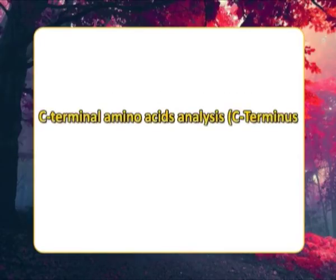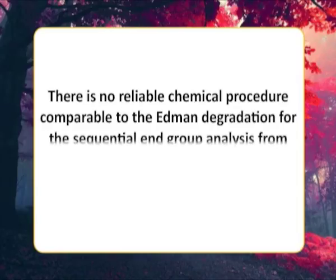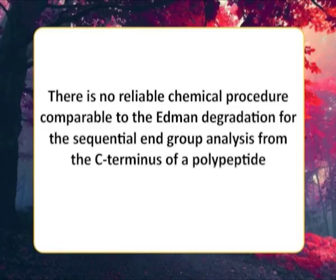Now coming to C-terminal amino acid analysis, that is C-terminus identification. The number of methods available for C-terminal amino acid analysis are less than available for that of N-terminal amino acid analysis. There is no reliable chemical procedure comparable to the Edman degradation for the sequential elucidation from the C-terminus of a polypeptide.